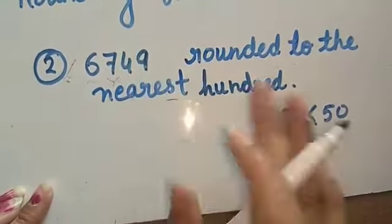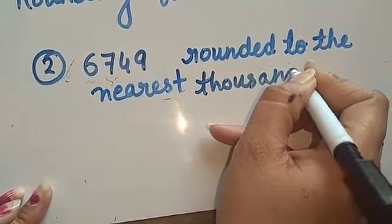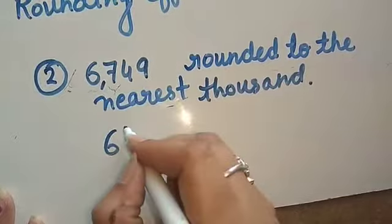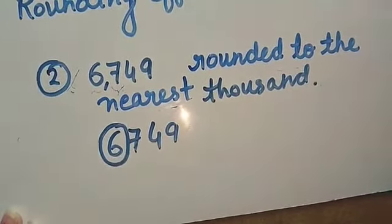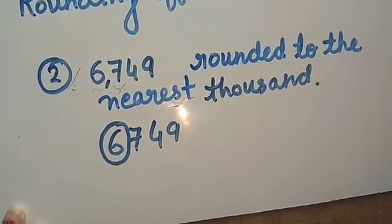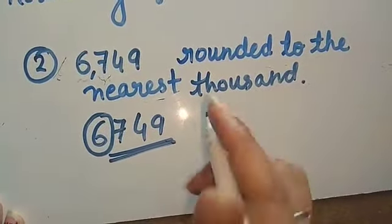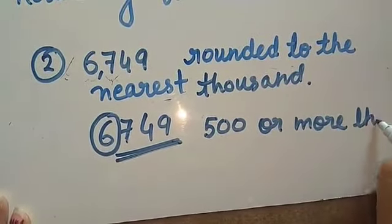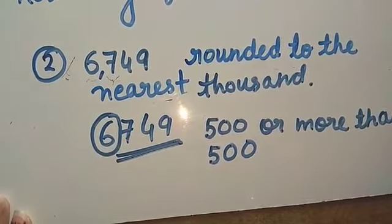Now, question number 3: 6749 rounded to the nearest thousand. This time, the place value that will be affected is the thousands place. First, identify the place to be rounded off — that place is the thousands place. Now check the number formed by the digits just on the right of the place to be rounded: 749 is given. If this number is 500 or more than 500, in the thousands place we write the next thousand number.